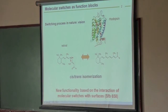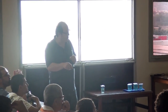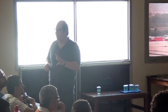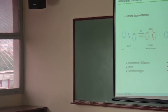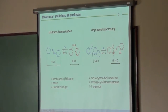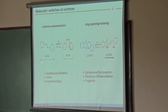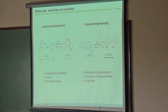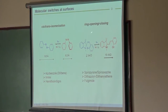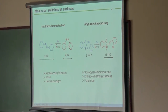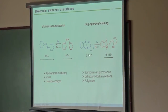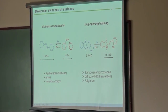What we're interested in is new functionality based on the interaction of molecular switches with surfaces. Molecular switches include those doing cis-trans isomerization — going from trans to cis form with a huge change in molecular geometry, the extension becoming much smaller — and ring-opening ring-closing switches which open the pi system. There is charge polarization involved, with a strong change of dipole moment from 3-4 debye to 15-18 debye in these molecules.